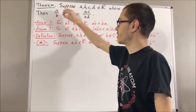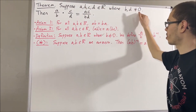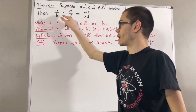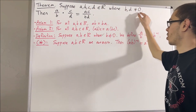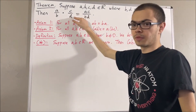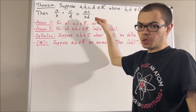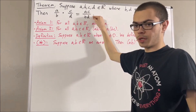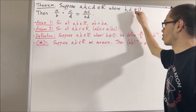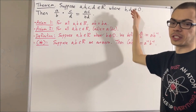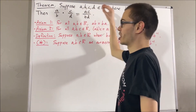Likewise, we can make sense out of the main theorem statement. Since A and B are real numbers where B is not equal to 0, by definition of division we can make sense out of A over B. Since C and D are real numbers such that D is non-zero, we can make sense out of C over D. And we can also make sense out of AC over BD, because AC and BD are real numbers, BD is non-zero since B and D are non-zero, and the product of two non-zero real numbers is a non-zero real number. So now let's try to prove it.